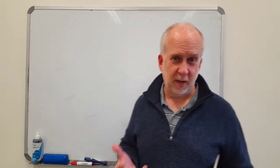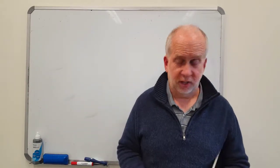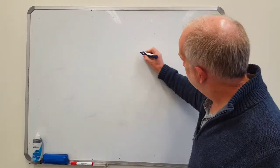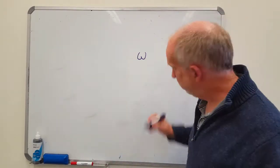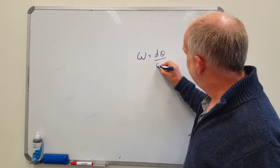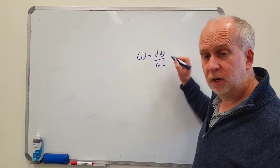In this video, I'm going to explain what angular velocity is. Angular velocity is written with the Greek letter omega, which is a sort of curvy W shape, and it's equal to the rate of change of the angle, so d theta by dt.